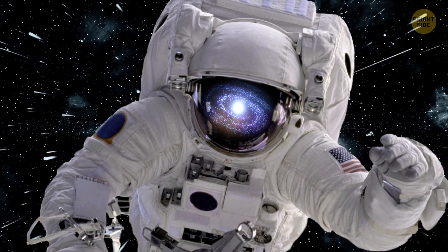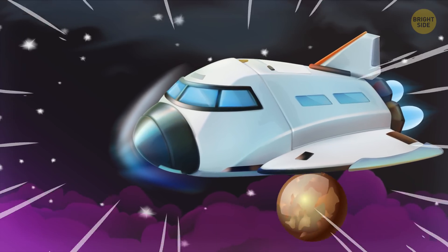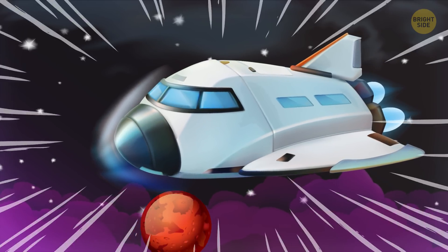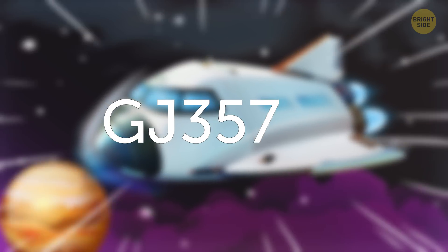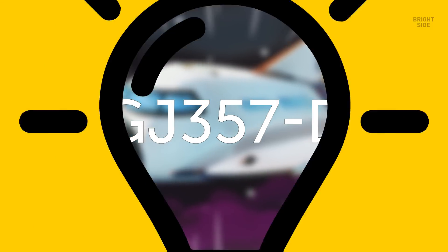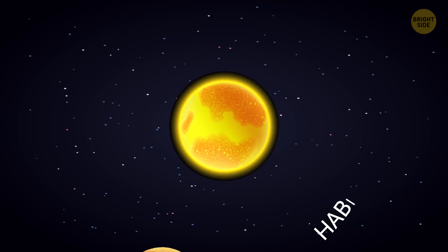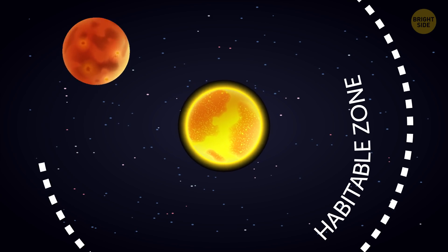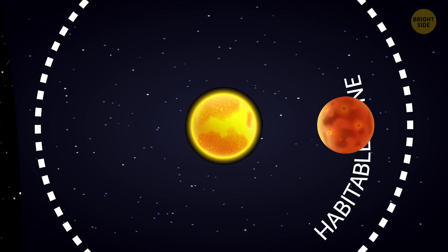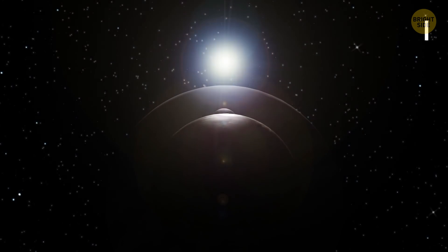If you're going to start naming some new worlds, it would be good to know a little bit more about them. So back to GJ357d. As I said, it's orbiting inside the solar system's habitable zone, warm enough to support life, but not so warm that it ends up charbroiled.